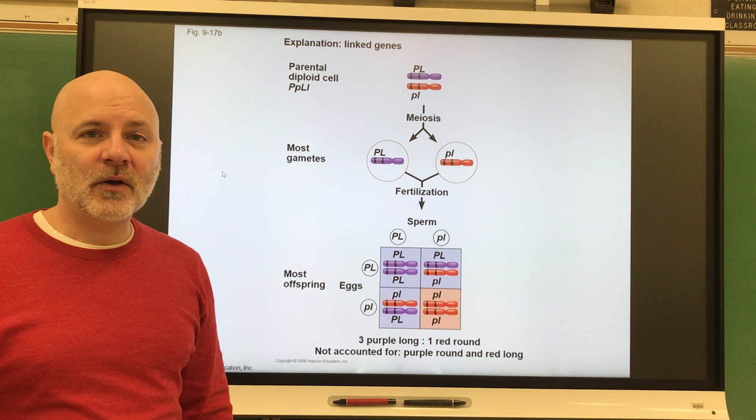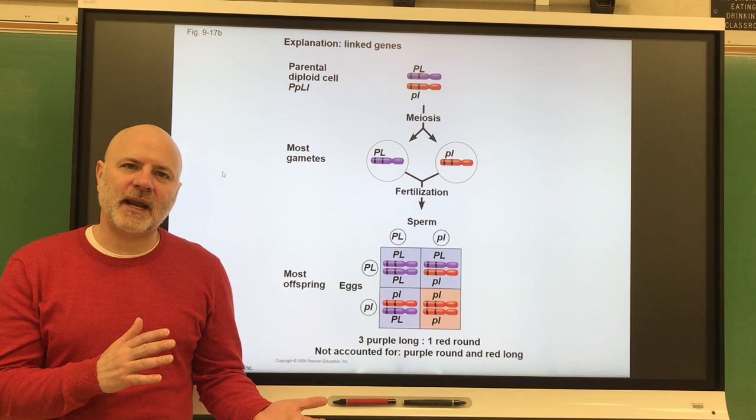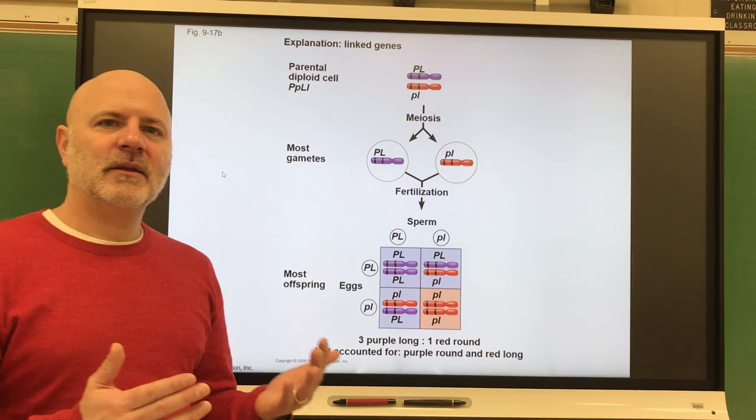Now, let's take a look at some non-Mendelian genetics. In Mendelian genetics, what we have is you have simple dominance. You had two alleles for a trait, and one allele was dominant to the other one. So, here we're looking at things outside of that. Linked genes are actually one of those.